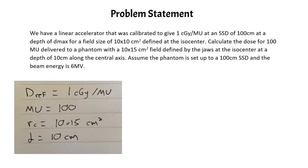We are also given that the collimator field size is 10×15 and the depth of the calculation is 10 centimeters. We are also told the beam energy of 6X and that the setup SSD is 100, which is the same as the reference conditions. So there's no need to convert our PDD value to a separate SSD because we are at the same SSD as the reference conditions.